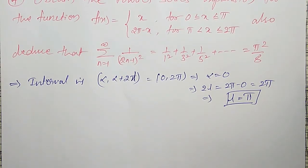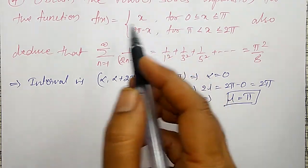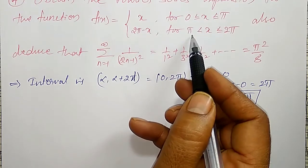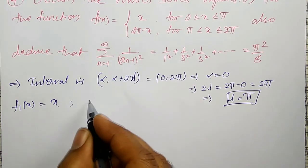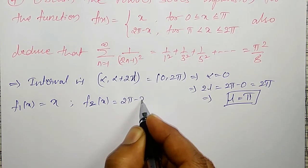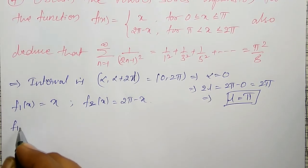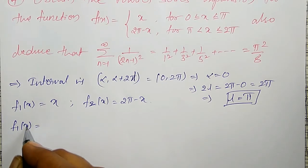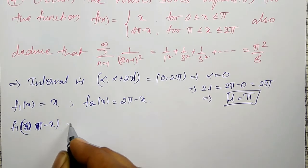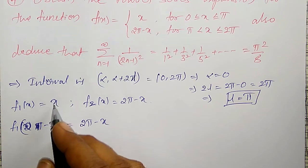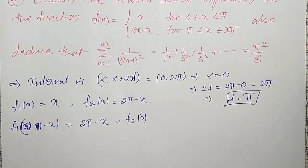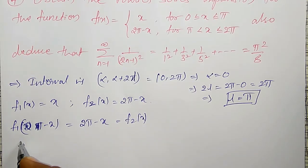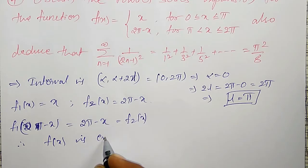Now let us check whether the function is even or odd. The function f(x) is defined in two different ways: f₁(x) = x for 0 to π, and f₂(x) = 2π − x for π to 2π. To verify, in f₁(x) let me substitute x replaced by 2π − x. I get 2π − x, which is equal to f₂(x). Therefore f₁(2π − x) = f₂(x), which means f(x) is an even function.